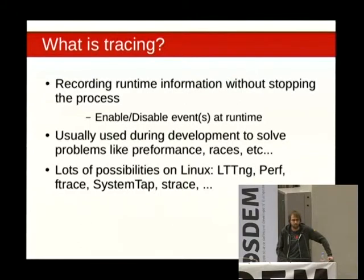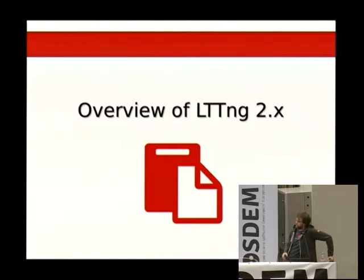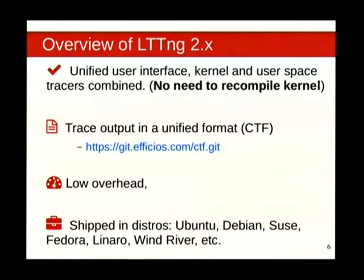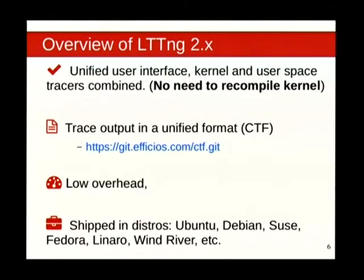With LTTNG, we created a user space tracer and a kernel tracer, then combined them in the LTTNG tools component so you can merge kernel and user space traces into one trace and analyze them together. Tracing is basically high-throughput, high-performance debugging — like printf but at high performance, scaled over CPUs. We're now shipped in Ubuntu, Debian, Red Hat, and other distributions.